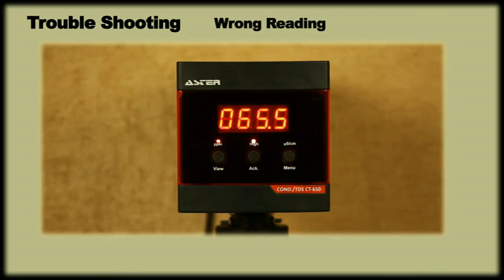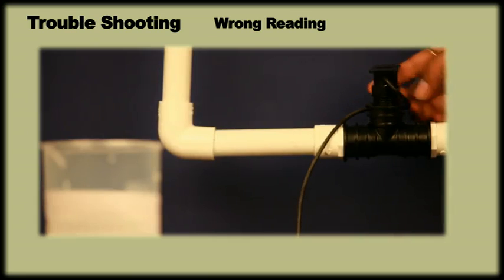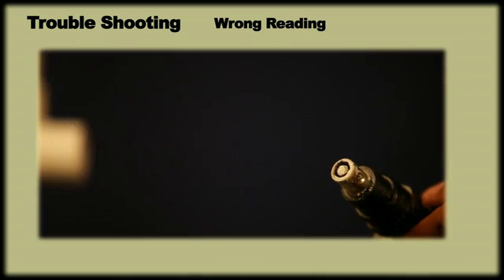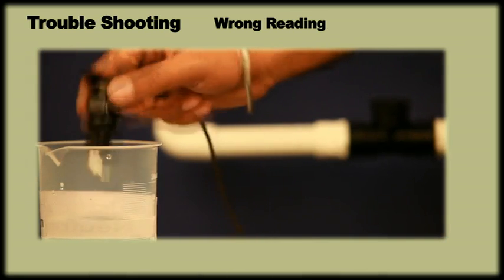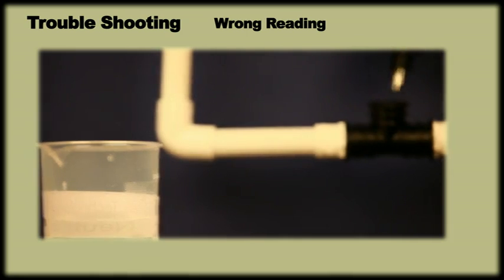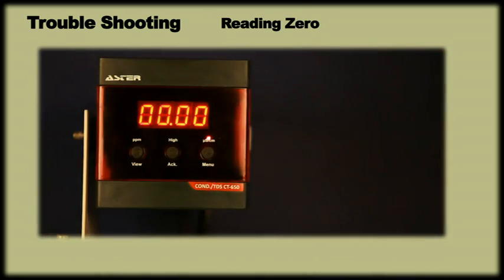If the meter shows wrong reading, it could be because of the following reasons. Check whether the sensor is installed correctly as per installation guidelines. If the sensor still shows wrong reading, then remove the sensor from line and check for any scaling or fouling. Clean the sensor in mild acid and reinstall. If it still shows wrong reading, then contact the nearest service center.